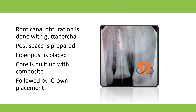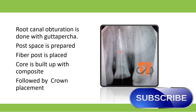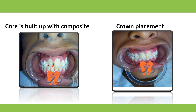Since the root apex was now formed, obturation was done with gutta-percha. Post space was then prepared and a fiber post was placed inside the canal. A composite core was built on the fiber post, followed by crown placement. In this case, we first performed pulpectomy, followed by apexification, then root canal treatment, then prepared a post, built a core, and placed a crown.